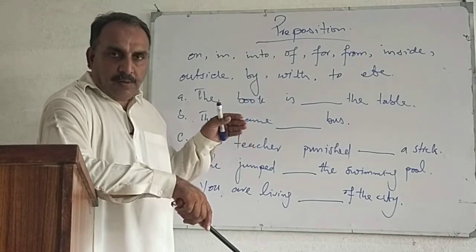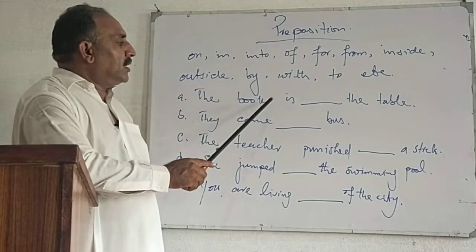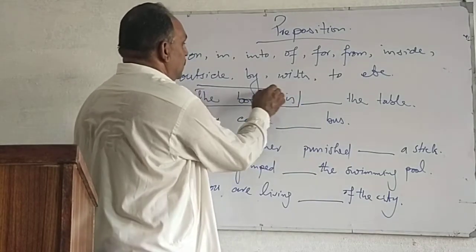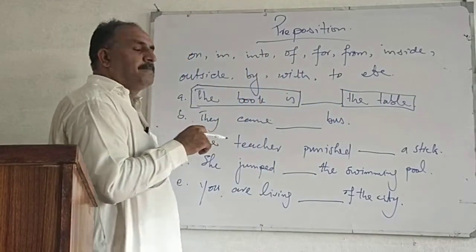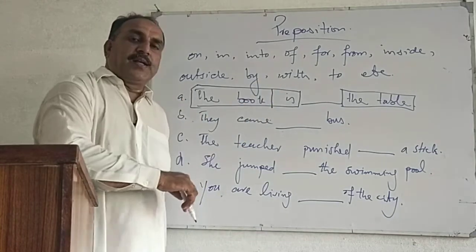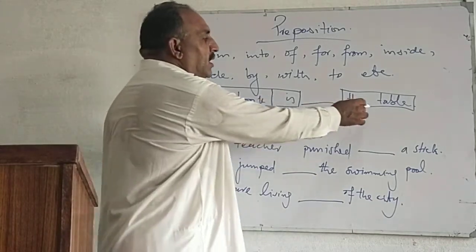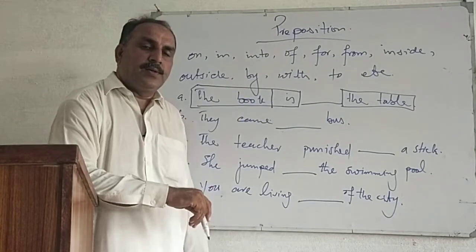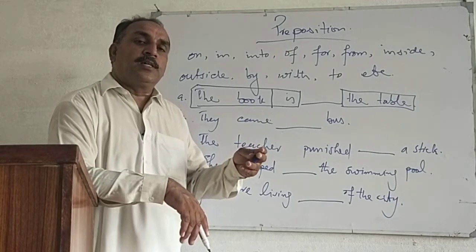Now, how are they used and how do they determine the place of an object with regard to the subject? Take the phrase 'the book is' — that is one phrase, and 'the table' is another phrase. Linguistically, 'the book is' is a noun phrase, 'is' is a verb phrase, and 'the table' is again a noun phrase. But how will we make a link between them? 'The book is' — as a phrase it doesn't show its meaning fully.